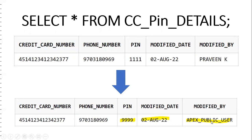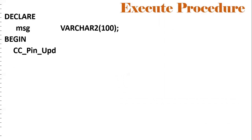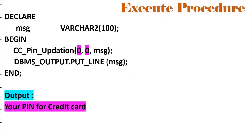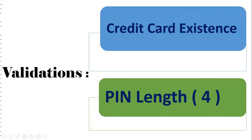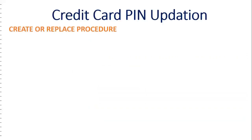This is the positive scenario. Now let's see the negative scenario — what if I pass '0000' as the credit card number and '0' as the PIN? The output says 'Your PIN for credit card 00 has been updated successfully' — this is a bug. We need to validate: first, whether the credit card number exists in the table; second, the PIN length must be exactly four digits. If we pass a single-digit PIN, it still accepts — that's wrong. We need to avoid such bugs by handling both positive and negative scenarios.